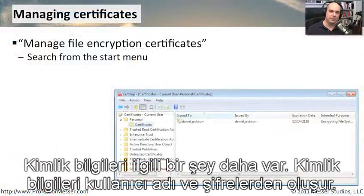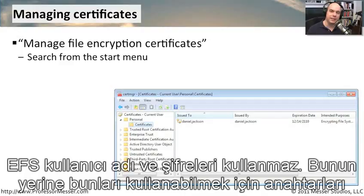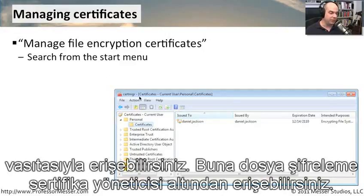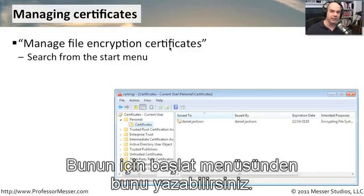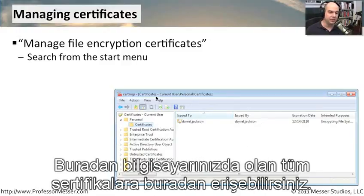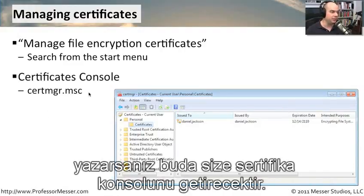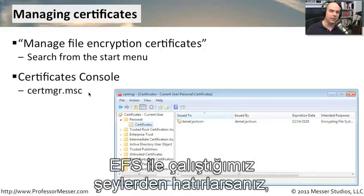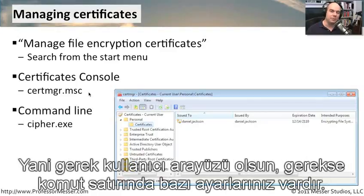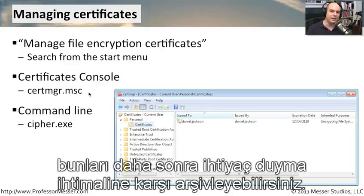Credentials are usernames and passwords. But as you may recall, things like EFS didn't use usernames and passwords — they use keys, they used encryption certificates. Those certificates are stored and accessed through the certificate manager. It's under 'manage file encryption certificates.' If you go to your start menu and type that in, it'll bring up certmgr — the cert manager — and you're able to get access to all of the certificates on your computer. You can also just type certmgr.msc. When working with EFS, we also stored some of these keys from the command line using the cipher command.